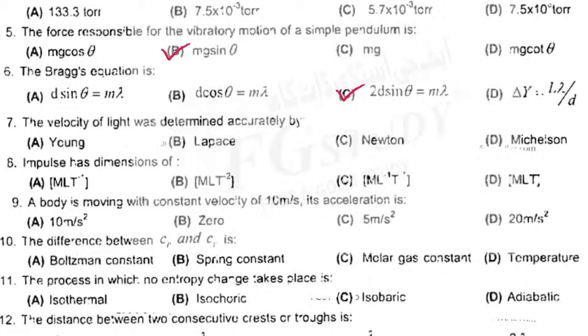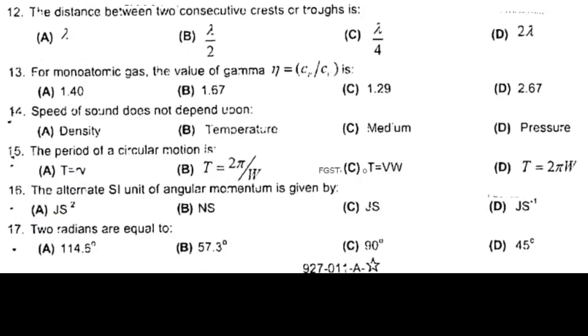The Bragg's equation is 2d sin theta = m lambda. The velocity of light was determined accurately by Michelson. Impulse has dimension of option A. A body is moving with constant velocity of 10 meter per second, its acceleration is zero. The difference between CP and CV is molar gas constant. The process in which no entropy change takes place is adiabatic. The difference between two consecutive capacities CP through is lambda. For monoatomic gas the value of gamma = CP/CV is 1.67. Speed of sound does not depend upon pressure.